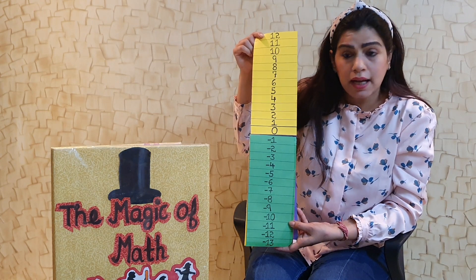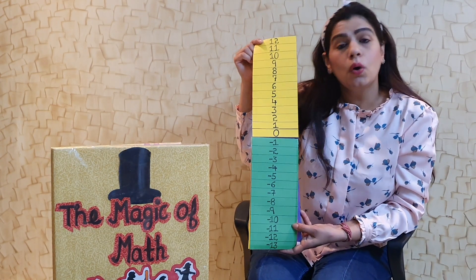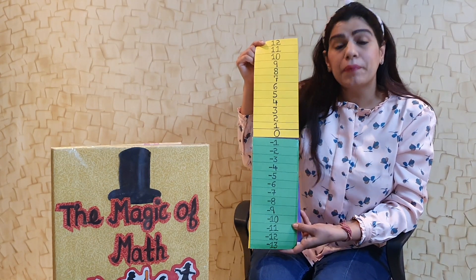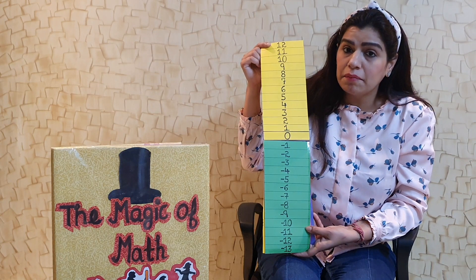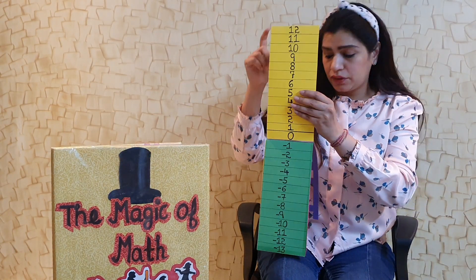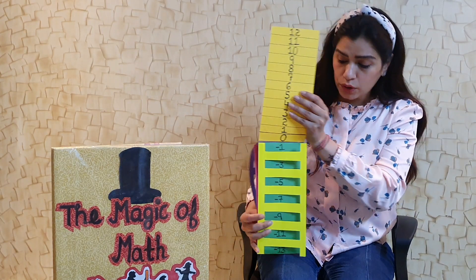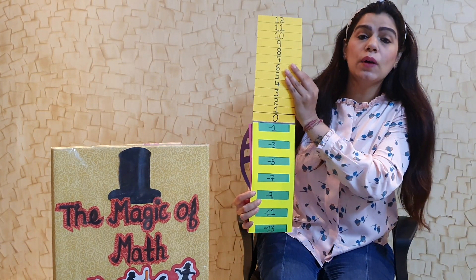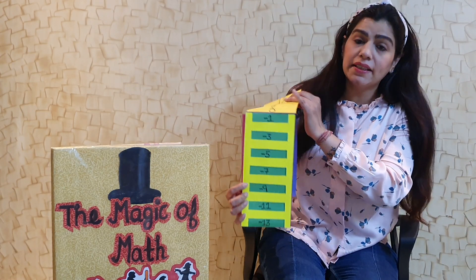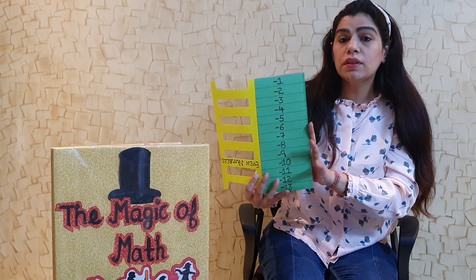And one more thing — when I close one flap on the back, what do I get? Minus 1, minus 3, minus 5 — these are negative odd integers.